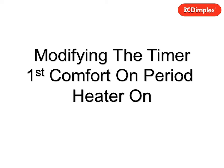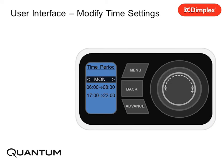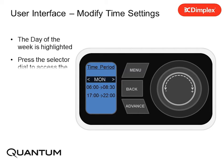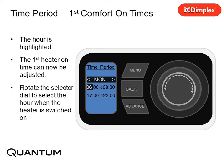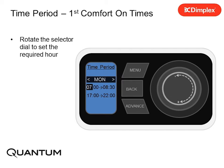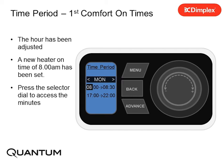Modifying the first comfort on period: the day of the week is highlighted. Press the selector dial to access the first time setting. The hour is highlighted and the first heater on time can now be adjusted. Rotate the selector dial to select the hour when the heater is switched on. A new heater on time of 8am has been set.